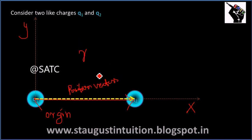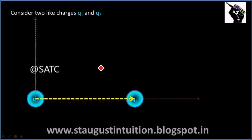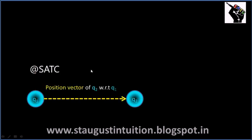Position vector is written by the letter R. The position vector of Q2 with respect to Q1 — here Q1 is the origin. So the position vector of Q2 with respect to Q1, consider this position vector as small r.